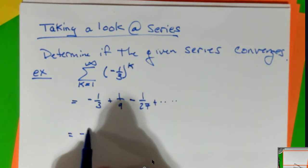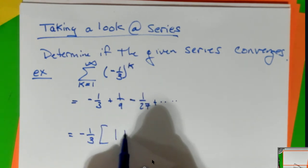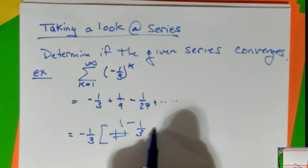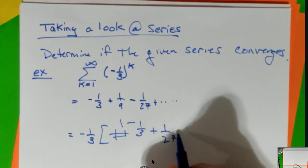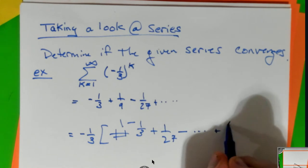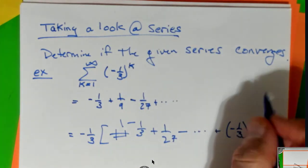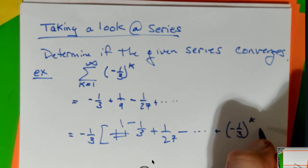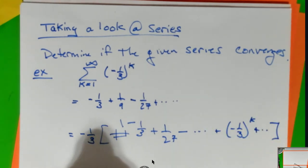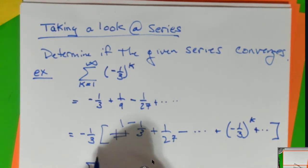I'm going to factor out negative a third. So this will be one minus a third plus a twenty-seventh minus, and I'm going to do this to the k. So I'm going to rewrite this as a series from k equals zero to infinity of minus one-third to the k.